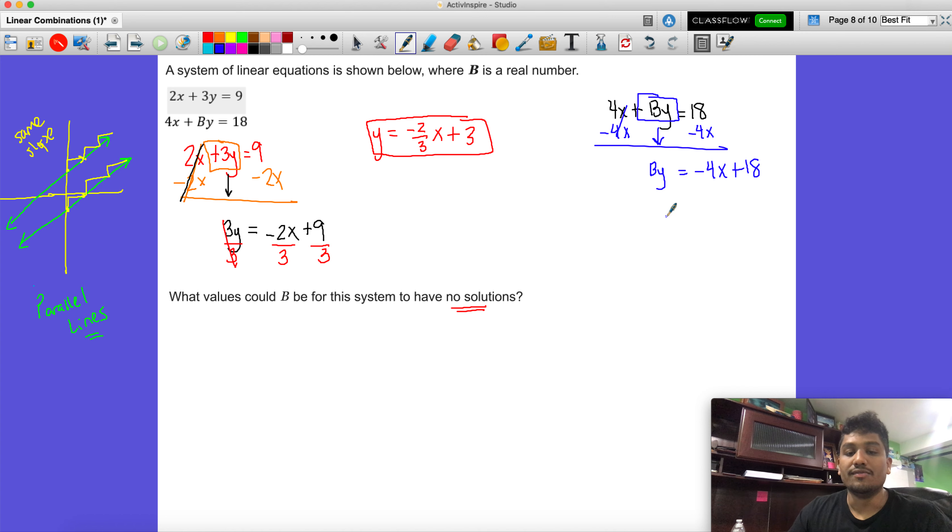And then down comes this by is equal to negative 4x plus 18. Now if we divided everything from here, I think it would be a little bit complicated. But you know what? Let's go ahead and do it. So we're going to have y equals negative 4 over b. I know that looks super confusing. Plus 18 over b. I totally get this. It looks really confusing right now.